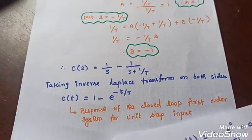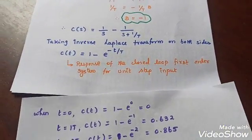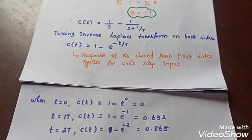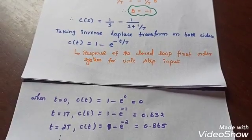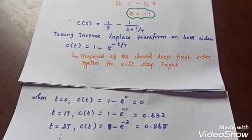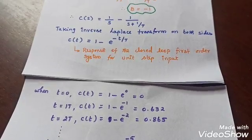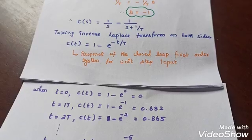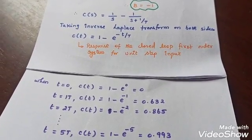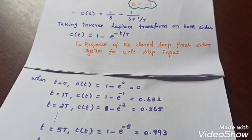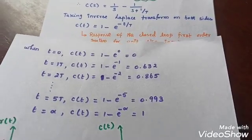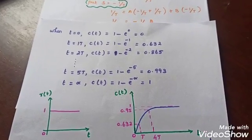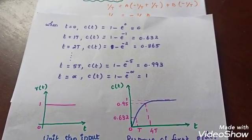Substituting t = 0, we get C(t) = 1 − e^0 = 1 − 1 = 0. Substituting t = T (one time constant), C(t) = 0.632. At t = 2T, we get 0.865. Finally, substituting t = infinity, C(t) = 1.